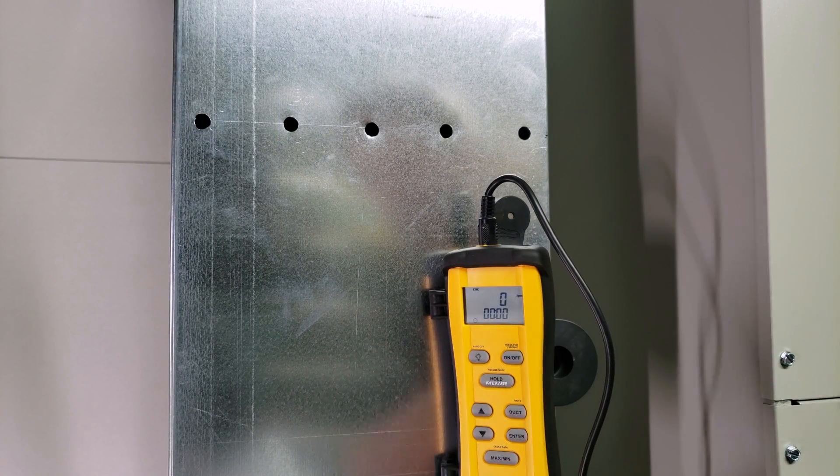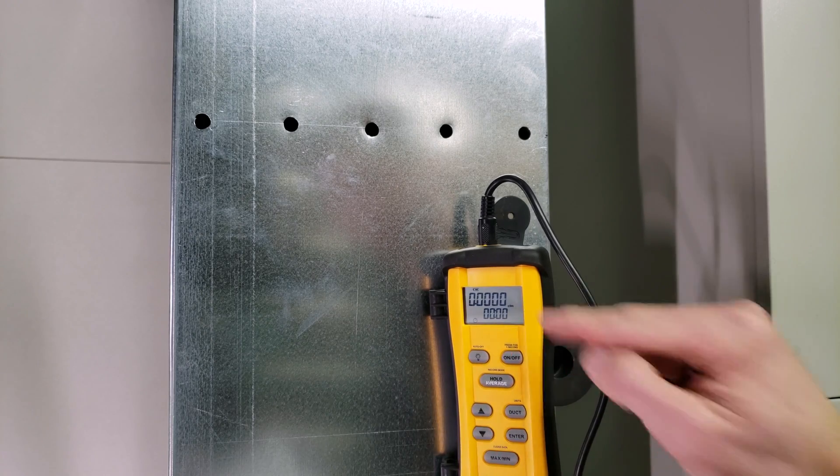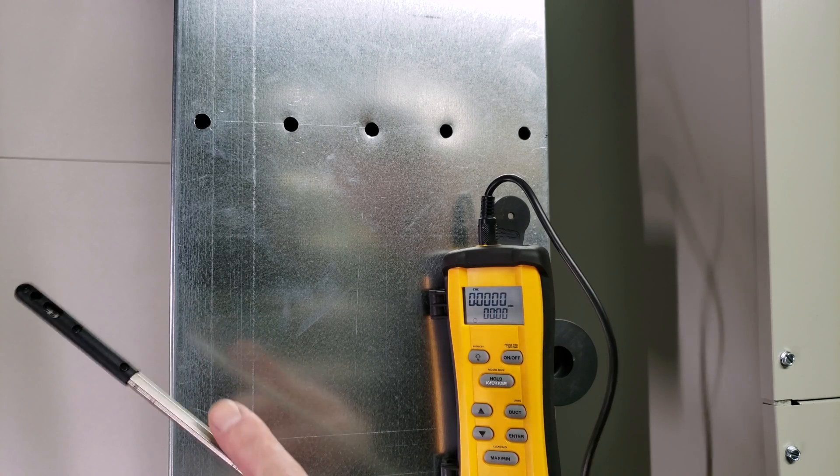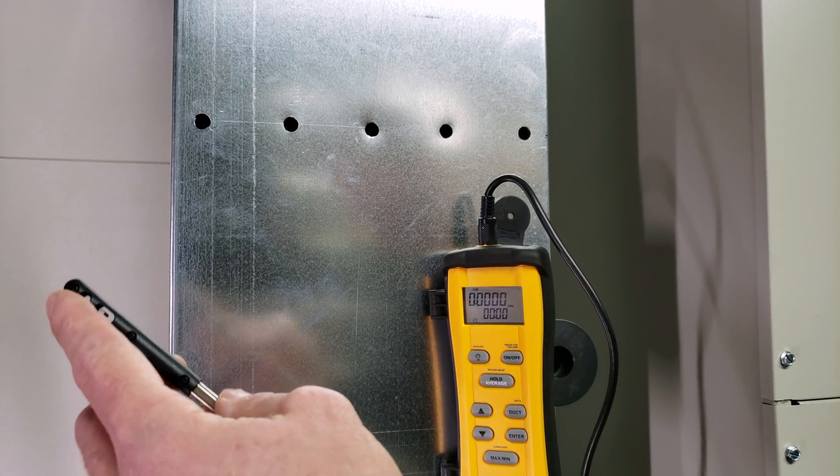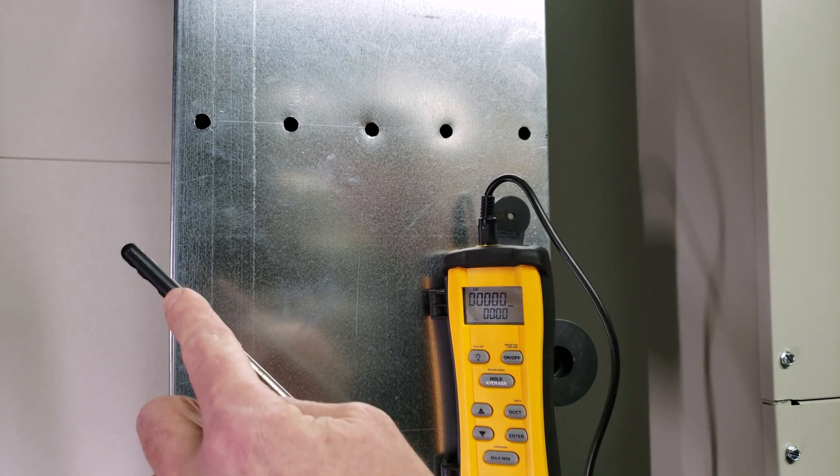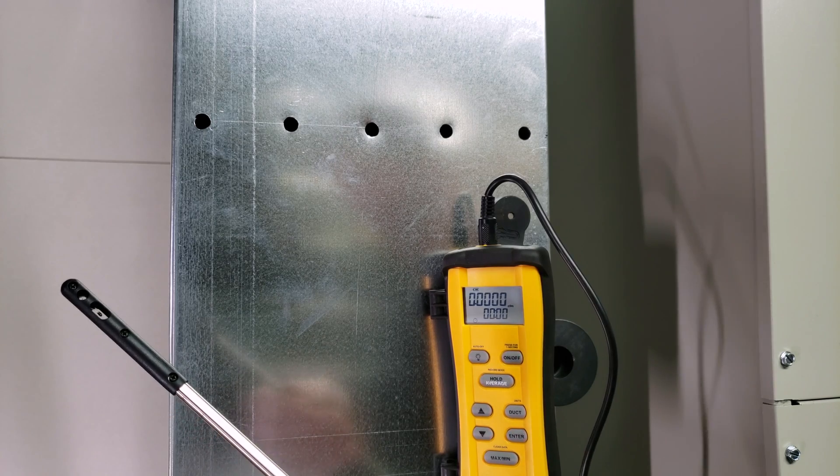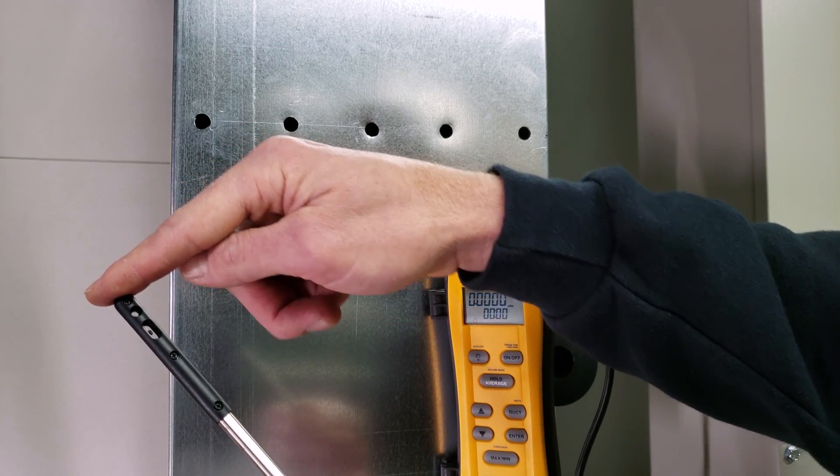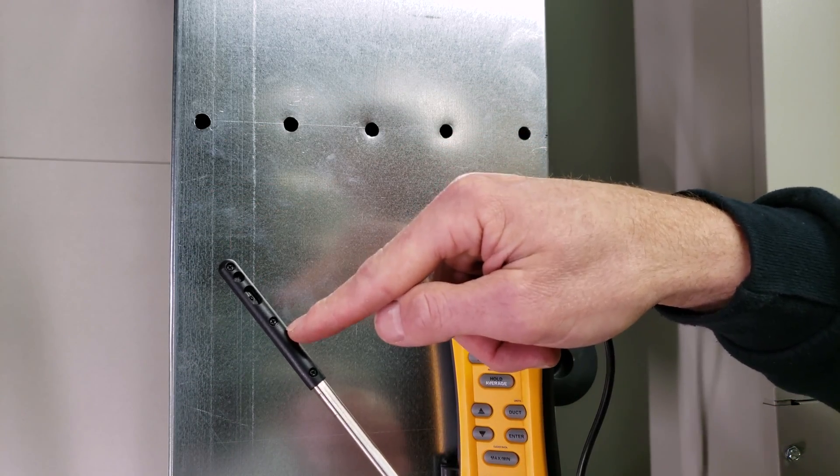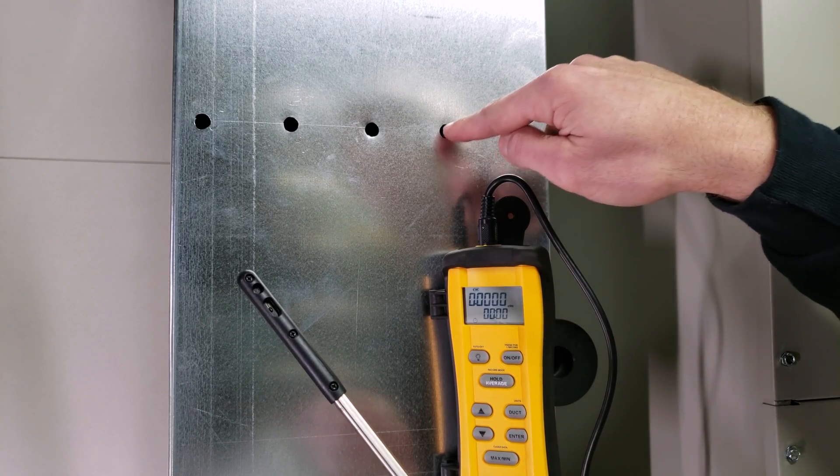We have our system running. I'm switching from feet per minute to CFM. There's a flat part on our probe that needs to be up to allow airflow through the two sensors. If not, airflow comes at the side and won't be accurate. I'll insert the probe all the way to the end of the duct, press enter to start the timer, then move it through all holes.